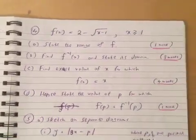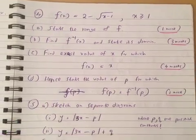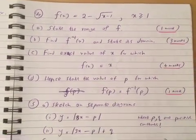Question 4, part a: Find f(x) equals 2 minus root x minus 1, where x is greater than or equal to 1. State the range of f.